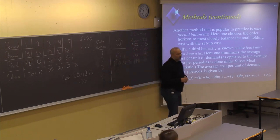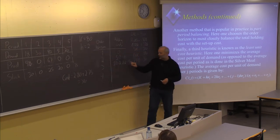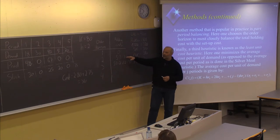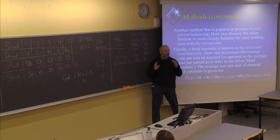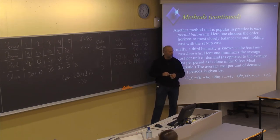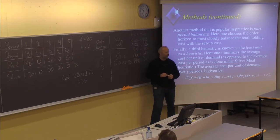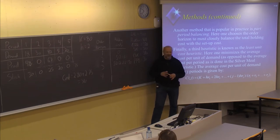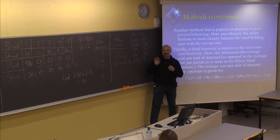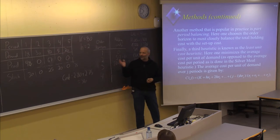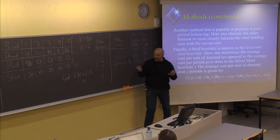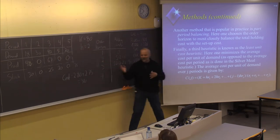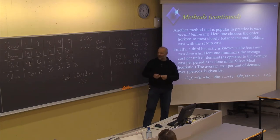A student asks why we chose 90. The answer: 90 is closer to 80 than 10. The idea is to choose the number of periods to produce for where the holding cost is closest to the setup cost — similar to the EOQ principle of balancing the two cost elements. If the holding cost had been 70 on both sides, there are no exact rules — it is up to you. This is also a myopic heuristic, not necessarily optimal, because new demand information arriving later could change the best strategy.